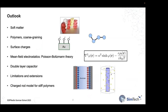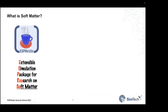That is the topic of this school. I'll start with a brief overview of soft matter and coarse graining, exemplified with polymers. Then we'll do some Poisson-Boltzmann theory, then move to energy storage materials, and finally go to the limit of coarse graining where we coarse grain a polymer to a charged rod. ESPResSo is really the simulation package for research on soft matter.